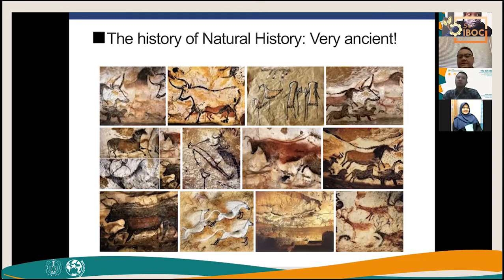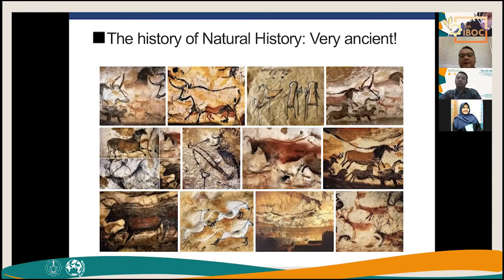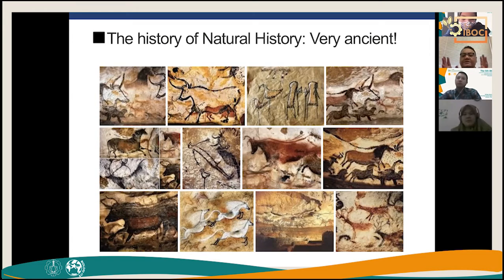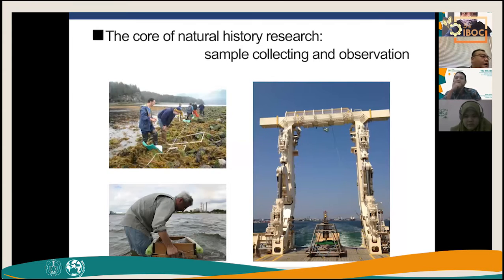For example, these cave paintings collected from the internet show that even ancient humans — cavemen — already classified organisms: these animals are to be hunted, some animals are hunting us, some are inedible, some look very different. So the science of natural history is very ancient, going back way before early human civilization.